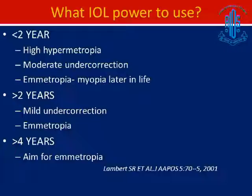Lambert et al. in 2001 published guidelines in AAPOS. For children younger than two years, three options exist depending on the status of the other eye and family compliance — emmetropia is chosen when the other eye is phakic with normal vision, or if the eye to be operated has severe amblyopia. For children older than two years, aim for emmetropia or mild undercorrection. For those older than four years, aim for emmetropia. These were the AAPOS 2001 guidelines.